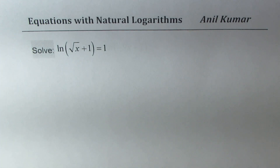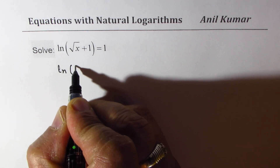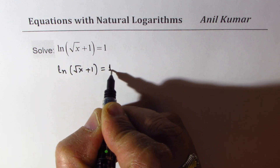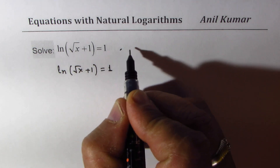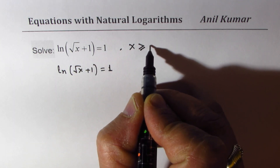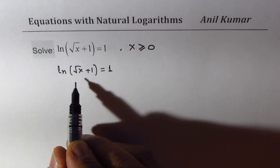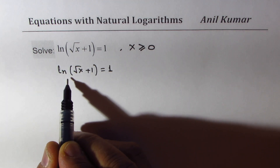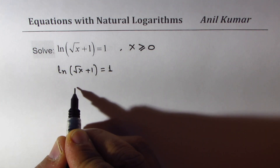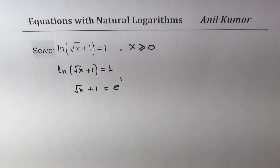The very first equation is ln of square root of (x plus 1) equals to 1. The restriction is that x has to be greater than or equal to 0. This is important since some logarithmic equations may have extraneous roots. Since ln is to the base e, writing this in exponential form gives square root of (x plus 1) equals to e to the power of 1, which is e.